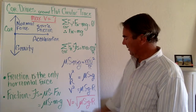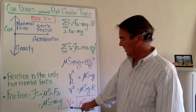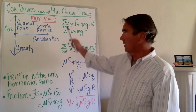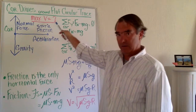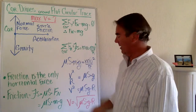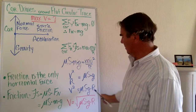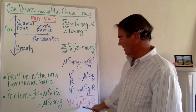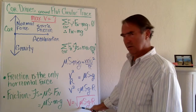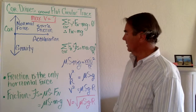The fastest a car can go around a flat circular track is equal to the square root of gravity times radius times the coefficient of static friction.